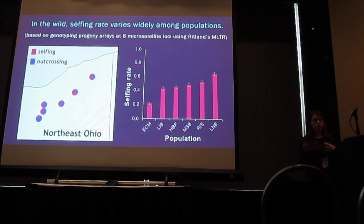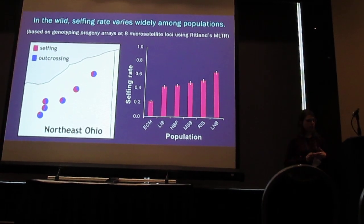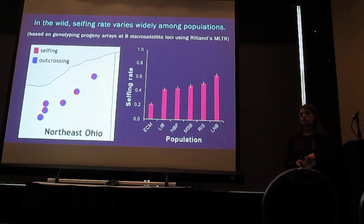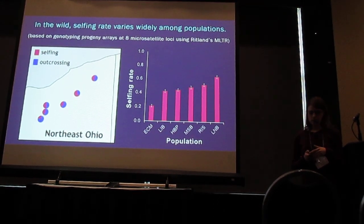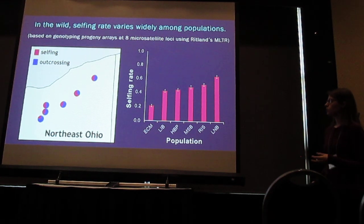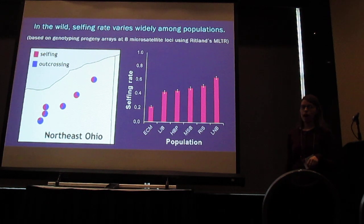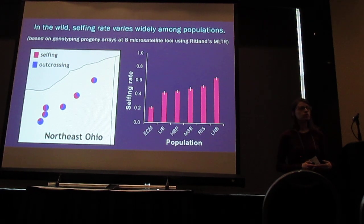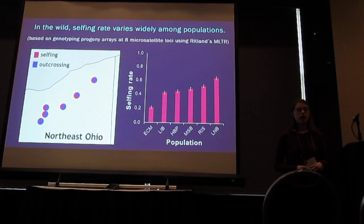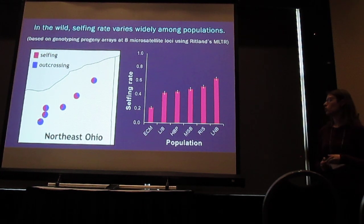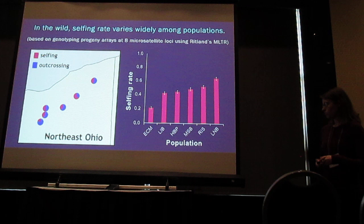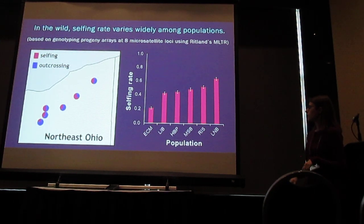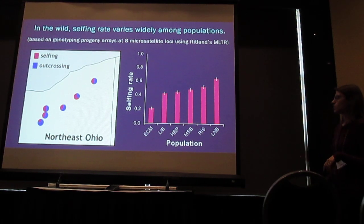We are studying selfing rate variation in 13 natural populations in Ohio. So far we have quantified selfing rates for six populations by genotyping progeny arrays at 8 microsatellite loci using Ritlin's MLTR. Based on these data, in the wild, selfing rate varies widely among populations. This map shows the proportion of selfing and outcrossing for those six populations, and there is no association between selfing rates and geographic locations, which suggests the potential for local adaptation in the mating system. Population selfing rates range from 20% to 65%.